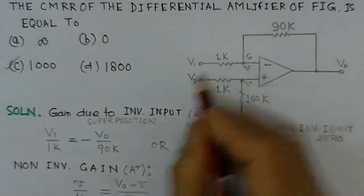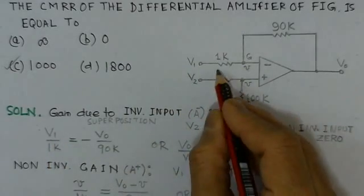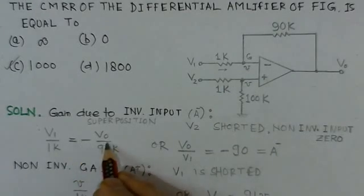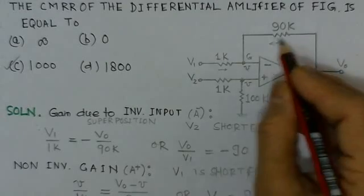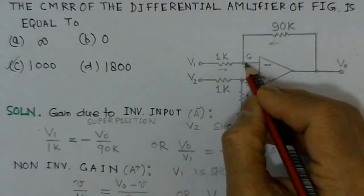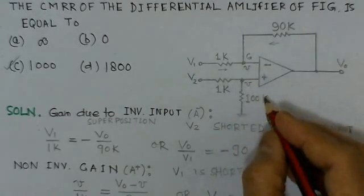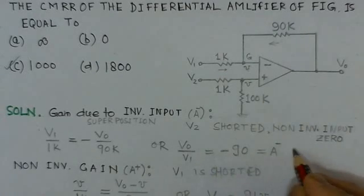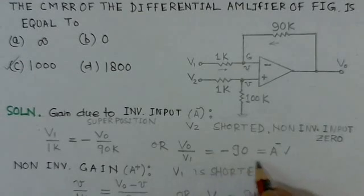At the virtual ground node G, the nodal equation gives: V1 over 1kΩ equals minus V0 over 90kΩ. This is the current flowing into each branch. Since no current flows into the op-amp, simplifying this equation gives the inverting gain as minus 90.